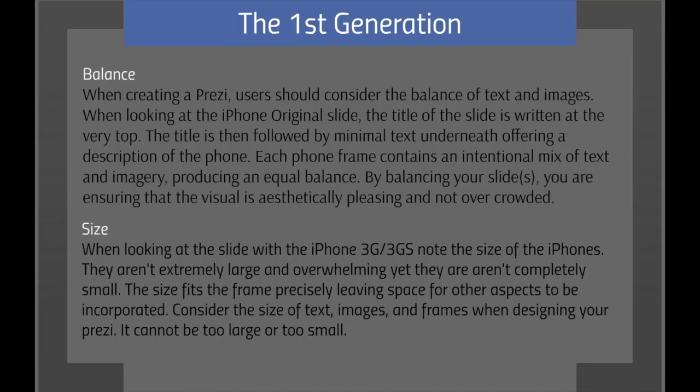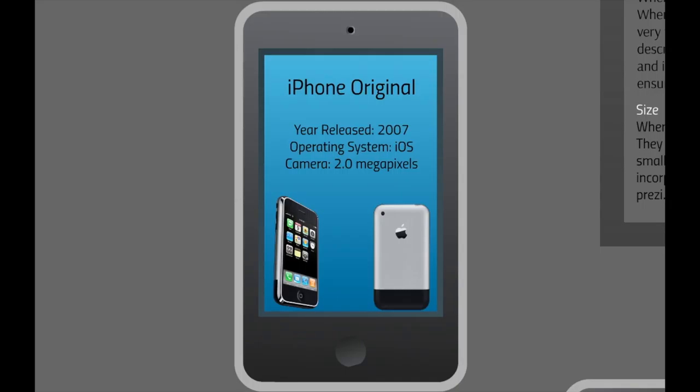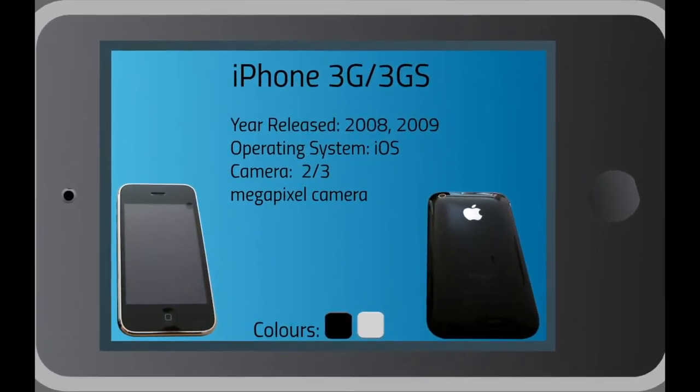The title of the slide is written at the very top, followed by minimal text underneath offering a description of the phone. The image of the iPhones are placed at the bottom of the frame building a mirroring effect. This is done to create balance within the frame. Note the size of the iPhones — they aren't extremely large and overwhelming, yet they aren't completely small. The size fits the frame precisely, leaving space for other aspects to be incorporated.